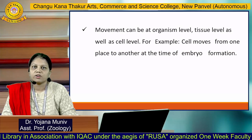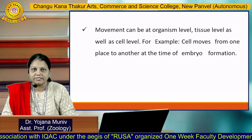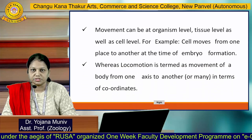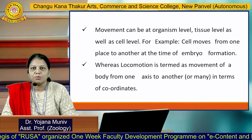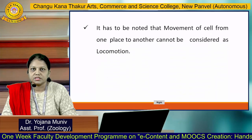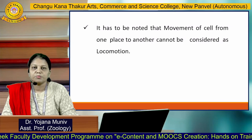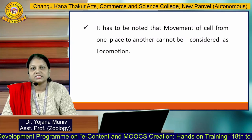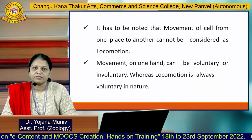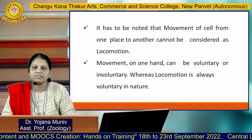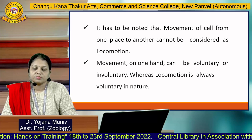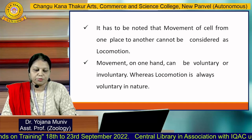Movement can be at organism level, tissue level, as well as cell level. For example, a cell moves from one place to another at the time of embryo formation. Locomotion is the movement of a body from one place to another. It has to be noted that movement of a cell from one place to another cannot be considered as locomotion. Movement can be voluntary or involuntary, whereas locomotion is always voluntary in nature. Voluntary means it is under the control of your will, but involuntary is under the control of your nervous system.